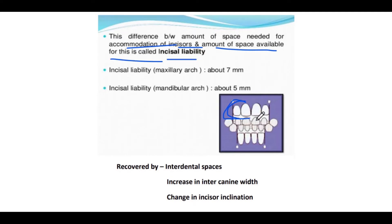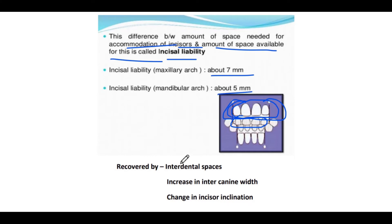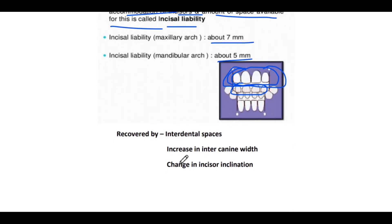As we know, permanent incisors are much larger than the deciduous ones, so the space required to accommodate these larger teeth is known as incisor liability — 7 mm for maxillary and 5 mm for mandibular. This space is recovered by interdental spaces present between the deciduous teeth, by increasing intercanine width, and by changes in incisor inclinations.